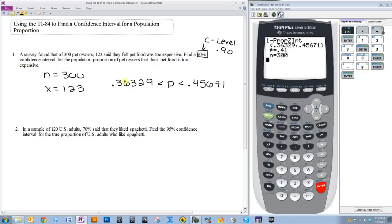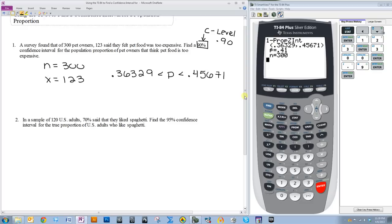Now, you can also write these as percentages, because we are talking about proportions here. So, you can do 36.329% is less than P, is less than 45.671%.